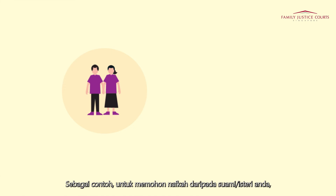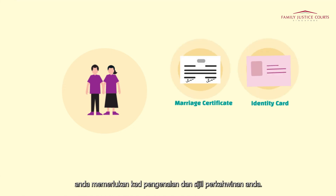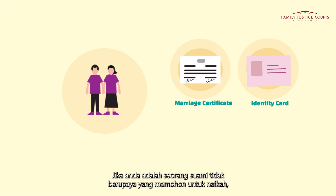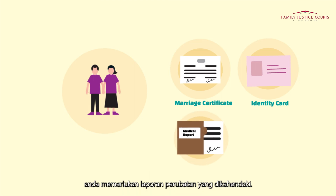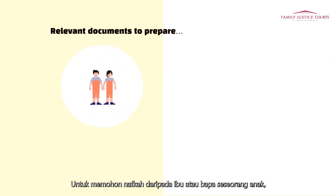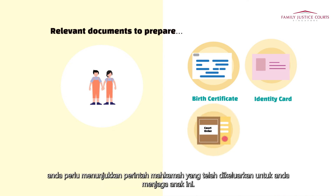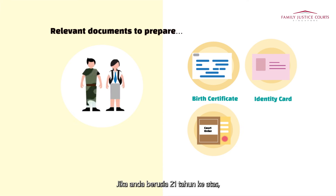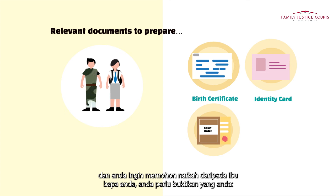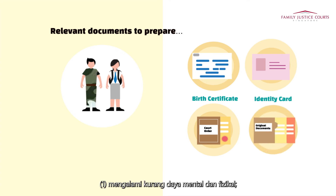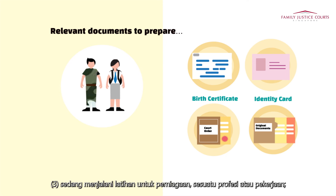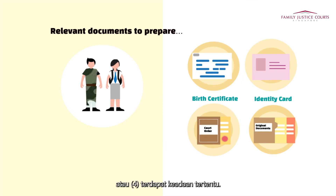For instance, to file for maintenance from your spouse, you will need your identity card and marriage certificate. If you are an incapacitated husband applying for maintenance, you will need the requisite medical report. To file for maintenance from the parent of a child, you will need your identity card and the birth certificate of the child. If you are a legal guardian of the child, you will need to show the court orders issued to take care of the child. If you are 21 years old and above and applying for maintenance for yourself from your parents, you will need to prove that you: 1) have a mental or physical disability; 2) are a full-time student or national serviceman; 3) are undergoing training for a trade, profession, or vocation; or 4) your special circumstances.